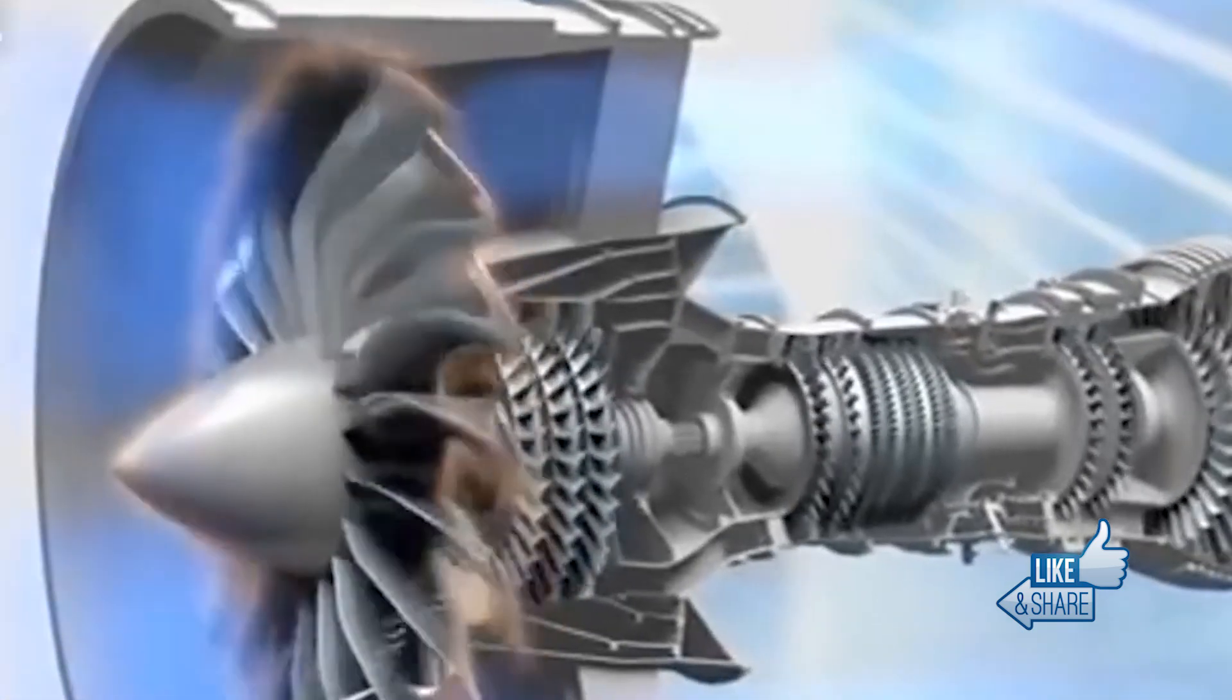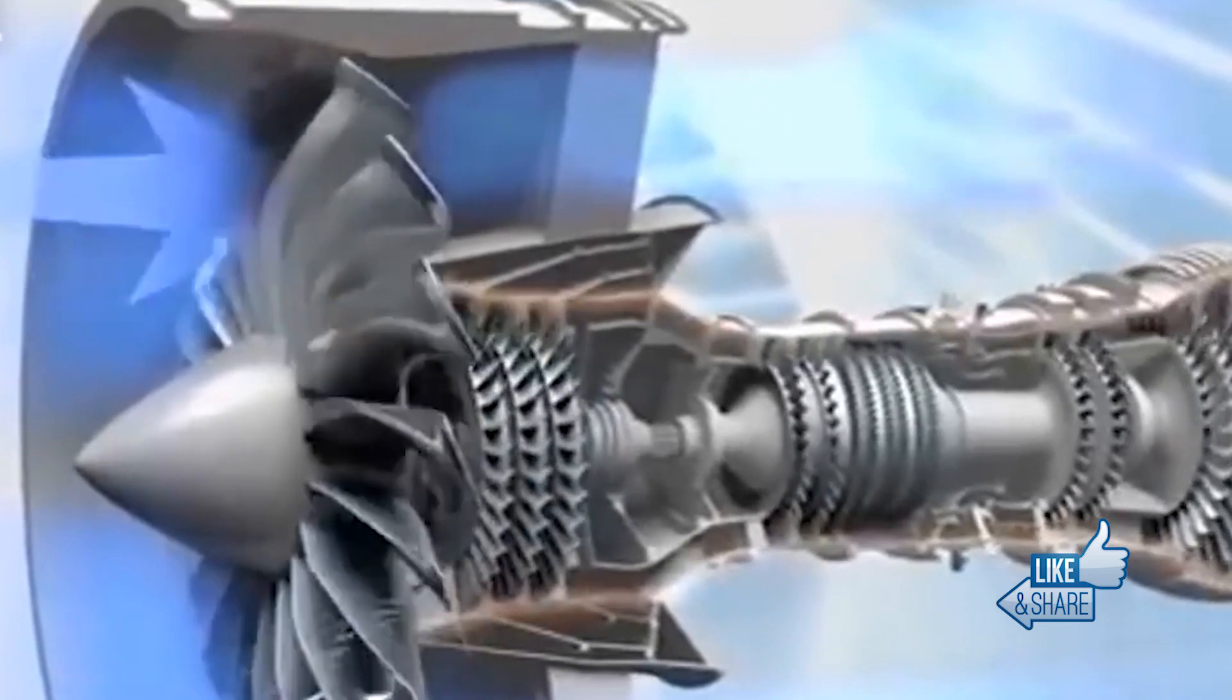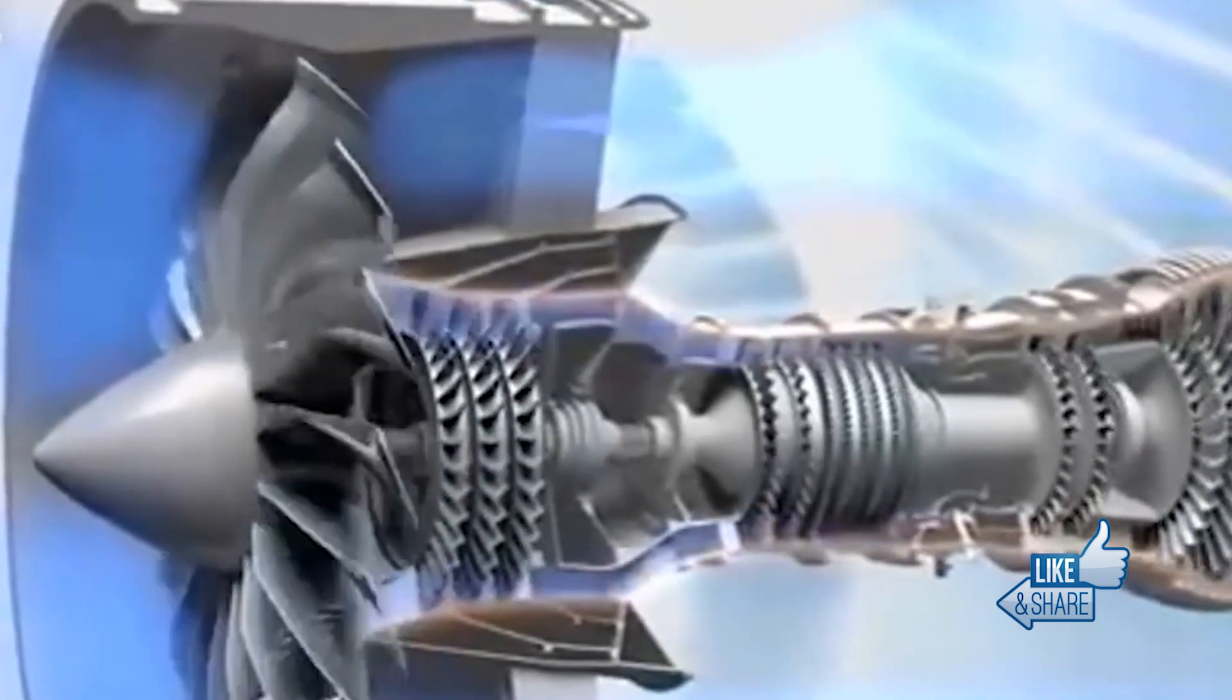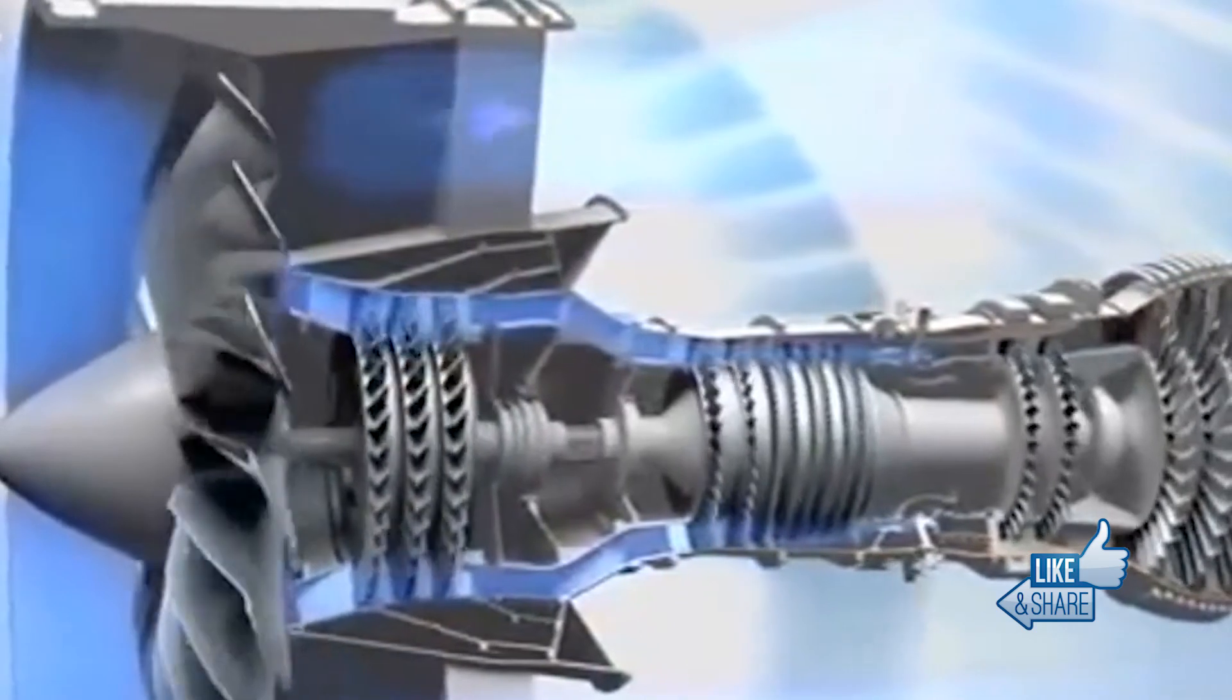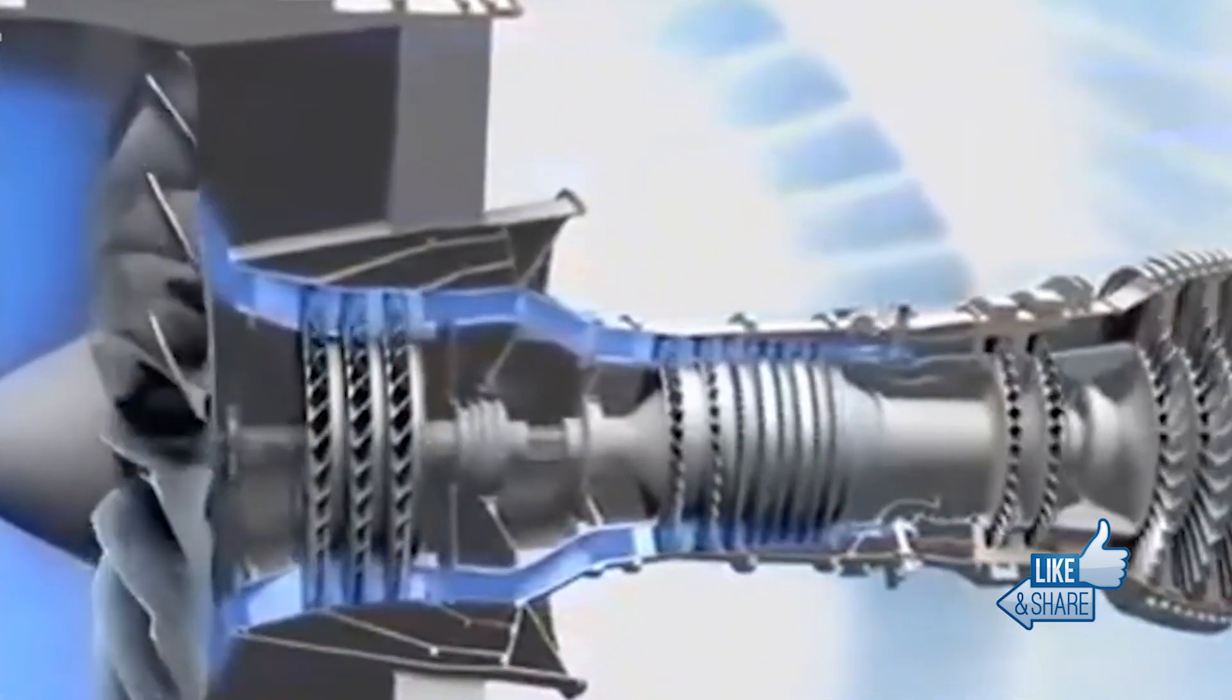Earlier, DRDO had also designed and developed a small turbofan engine, derivatives of which would be manufactured for a variety of UAVs, helping India achieve self-reliance in this critical technology.